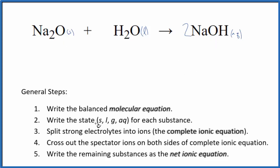So once we have the states, we can split the strong electrolytes into their ions for the complete ionic equation. We don't split solids apart when we have net ionic equations. So that's just going to be Na2O solid. We don't split liquids apart, so H2O, that'll be a liquid.